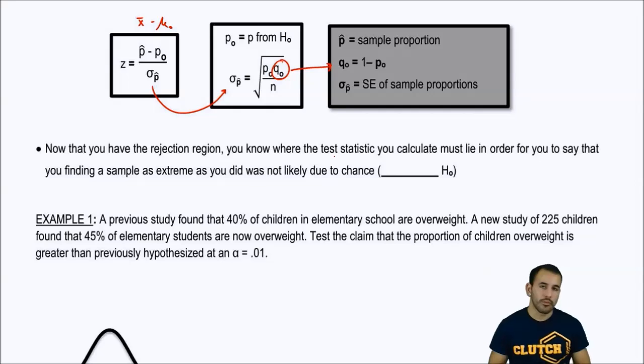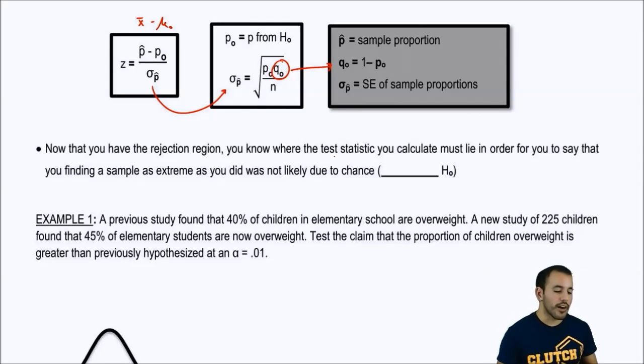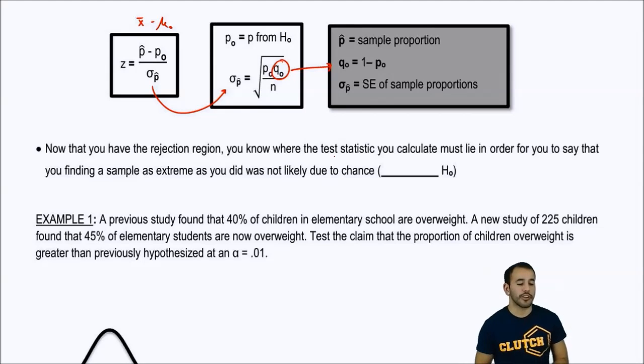So, now that, again, we've been able to find the rejection region for this thing before, and it's just using z, right? So, to get the critical z value, all we need is 0.5 minus alpha, or alpha over 2, and look that up in our table. So, now that you know how to get the rejection region, you know where the test statistic you calculate must lie in order for you to say that you finding a sample as extreme as you did, or more, is not likely due to chance. So, basically, our sample is so far off that, yeah, there's some variability, but at this point, it's so far from what the null says it should have been that we reject the null hypothesis.